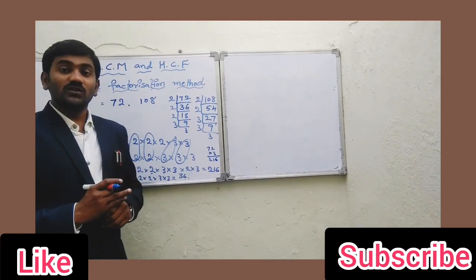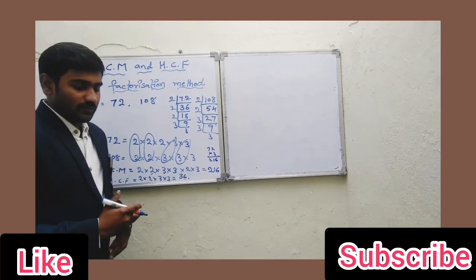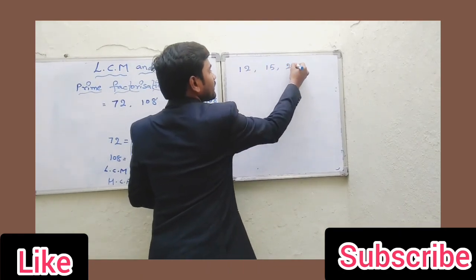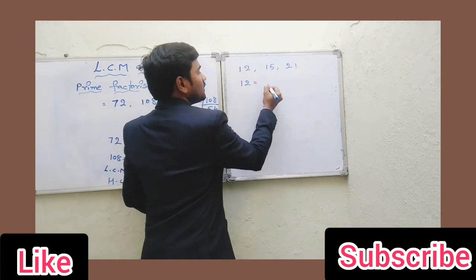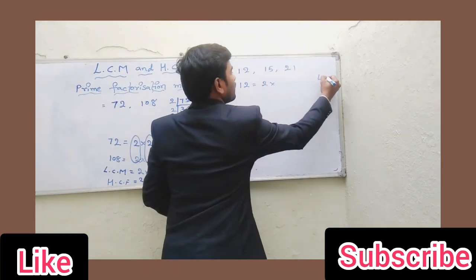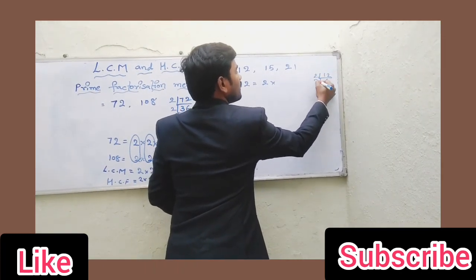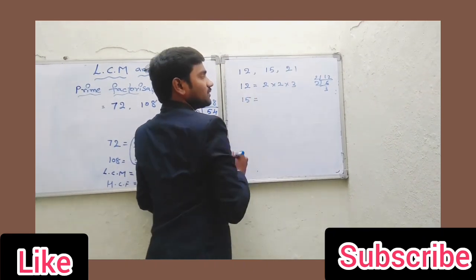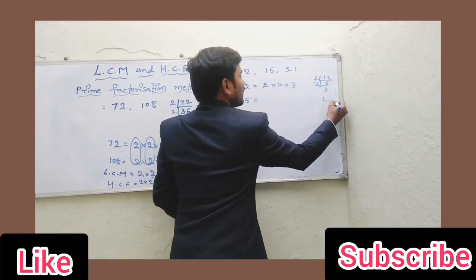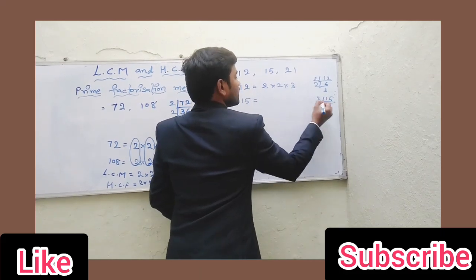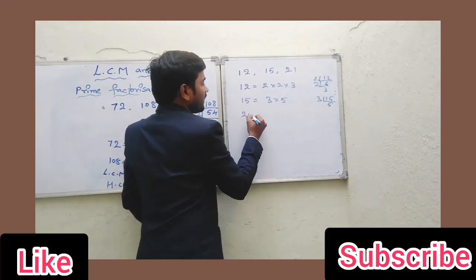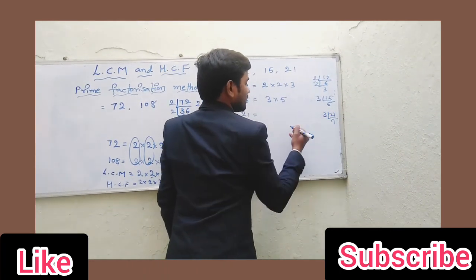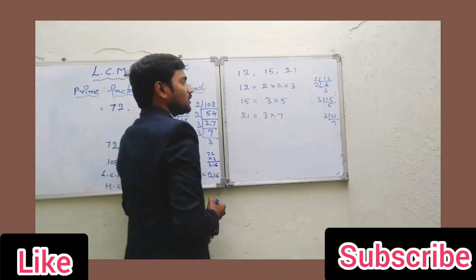This is a very simple method. Let us take one more example: 12, 15, and 21. The factors of 12 are 2 × 2 × 3. The factors of 15 are 3 × 5. And 21 equals 3 × 7.